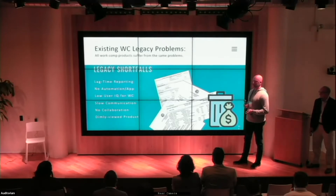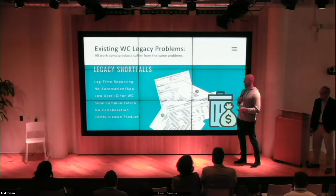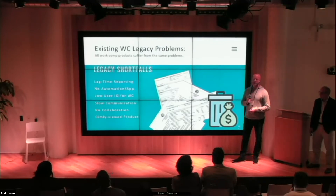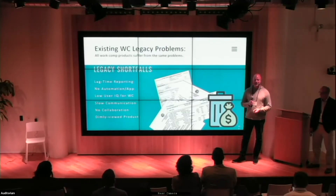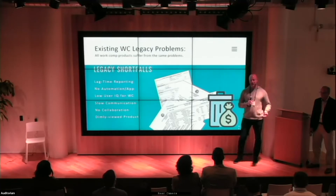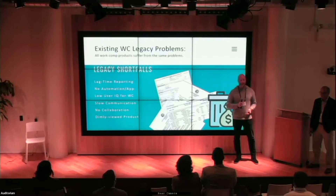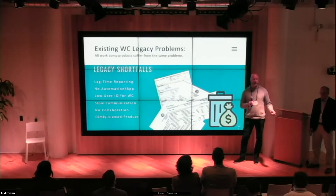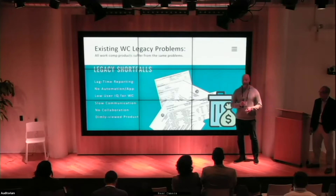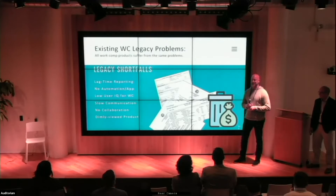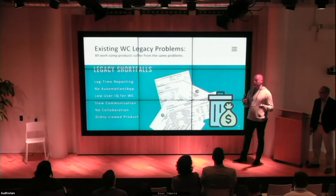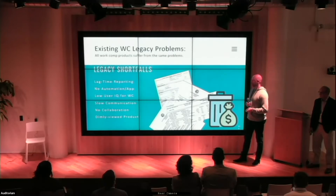A lot of the friction is that workers' comp is sold like a commodity — bundled with property and casualty — yet it's much more like a health insurance product. You're talking about human beings, and those human beings vary, even within the same classifications. So there's a lot of room for fat, fluff, and waste when you're going through the work comp system.